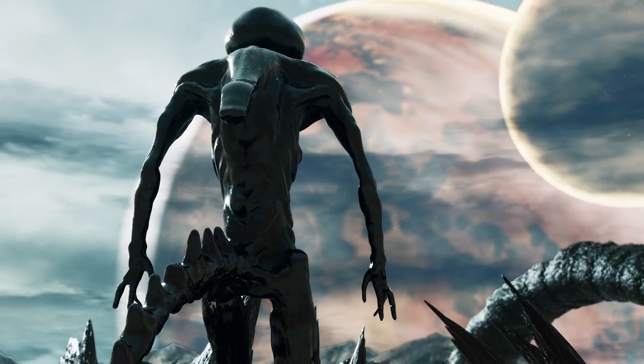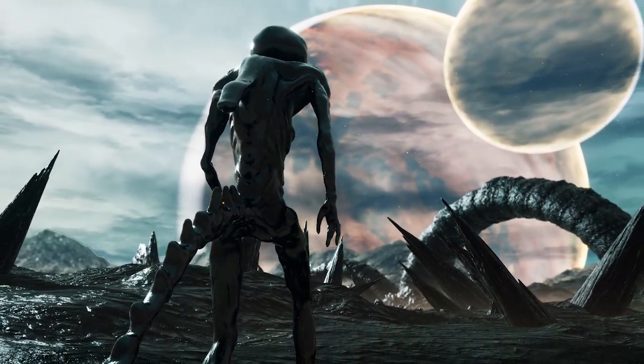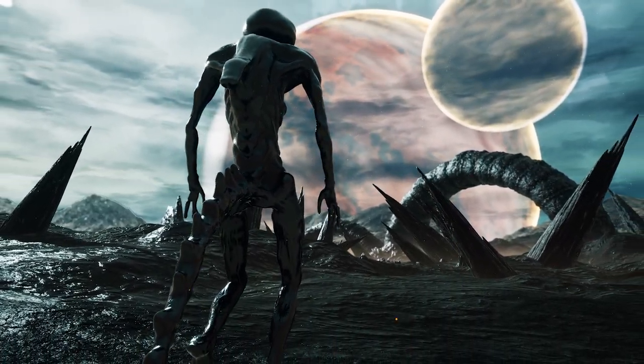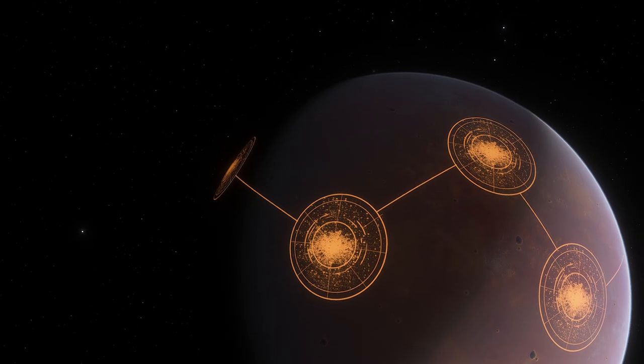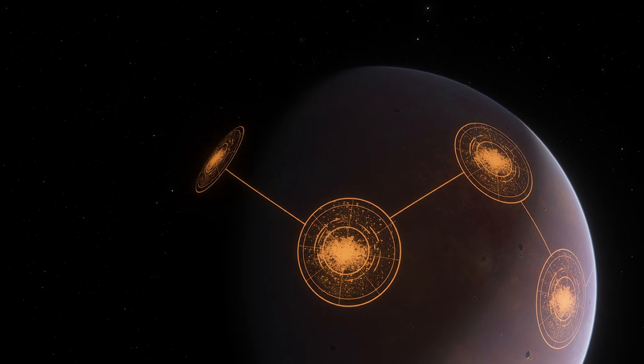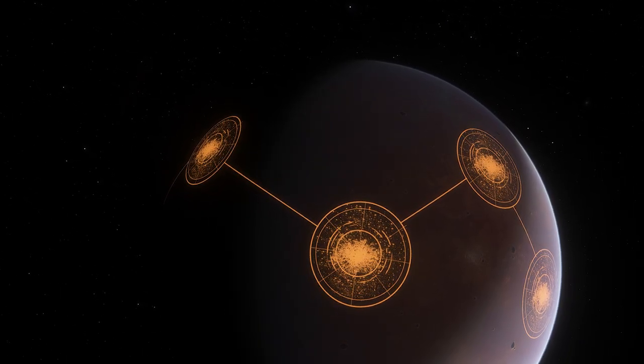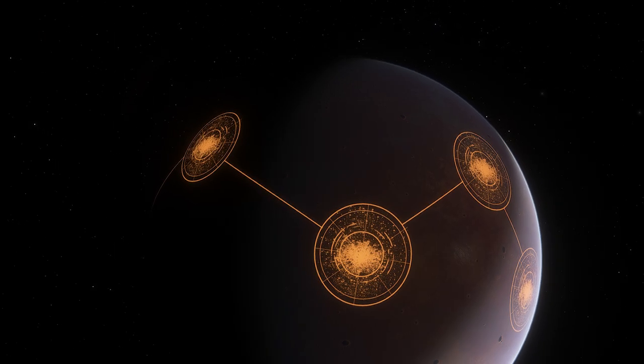Organisms on a tidally locked planet might develop intricate symbiotic relationships to help them survive in the challenging environment. For example, heat-resistant organisms on the day side might provide shelter and warmth to cold-tolerant organisms from the night side, while the latter provides nutrients or other resources in return.